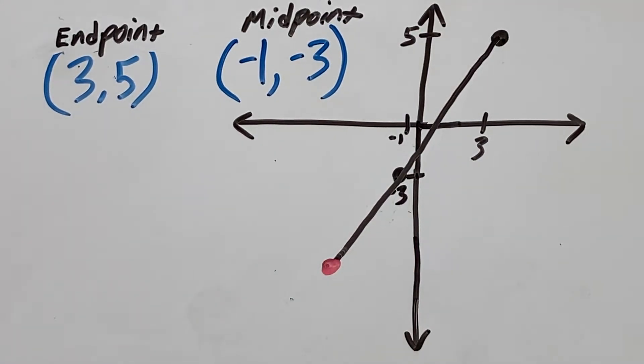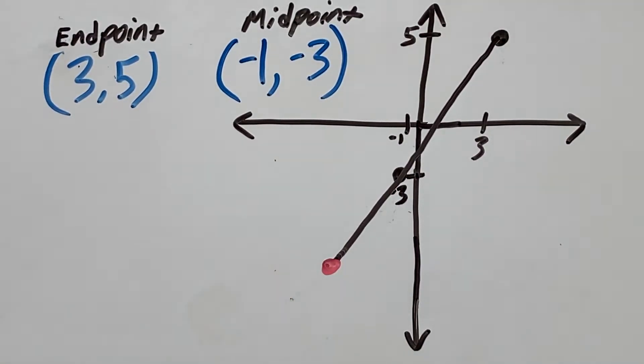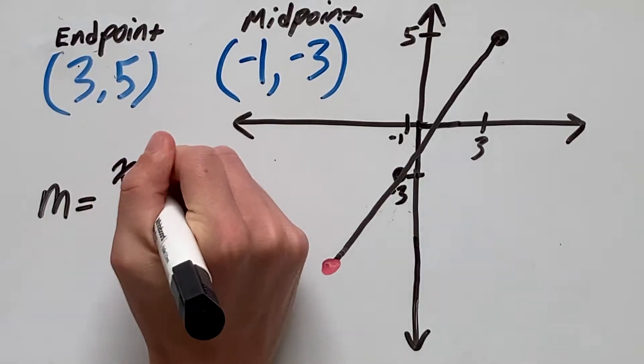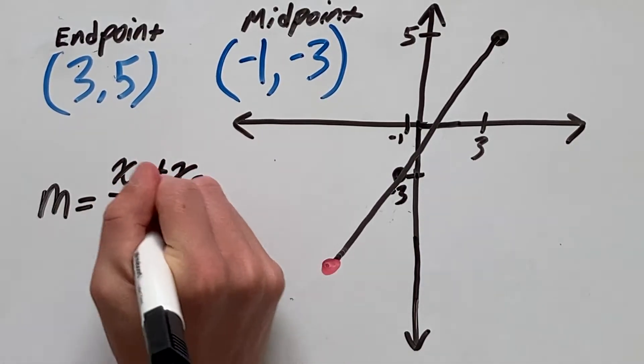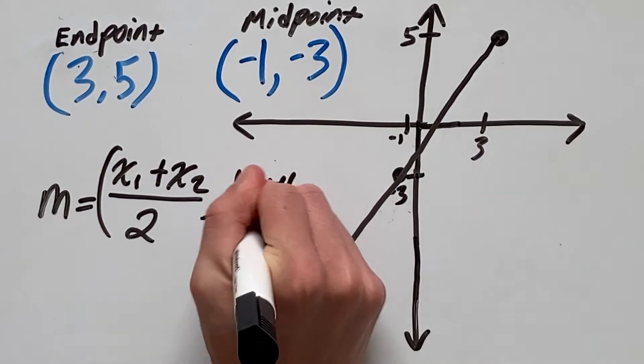When you're trying to find an endpoint and already given an endpoint and a midpoint, you're going to use the midpoint formula but a bit of a modified version. So in case you've forgotten, the midpoint formula goes as follows. So we have midpoint equals x1 plus x2 over 2 and y1 plus y2 over 2.